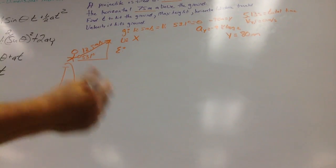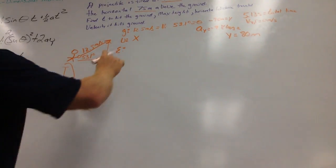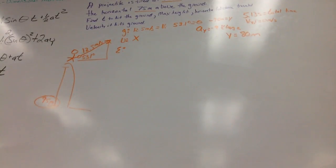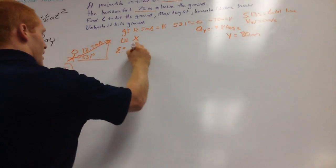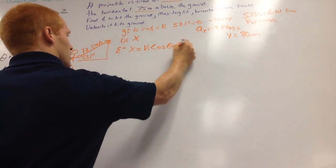Vyf at maximum height, we have y, we have the acceleration of gravity, and we're trying to find x. Okay, so with all those variables that we have, we can use an equation x equals vi cosine theta t.